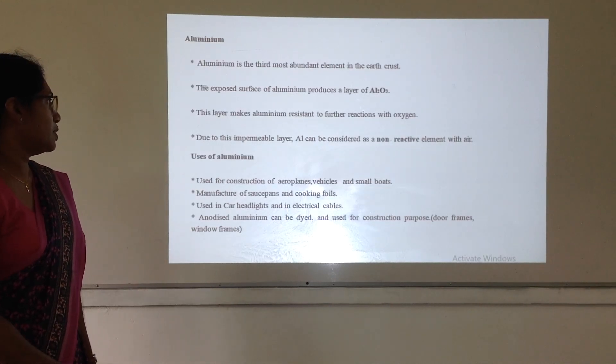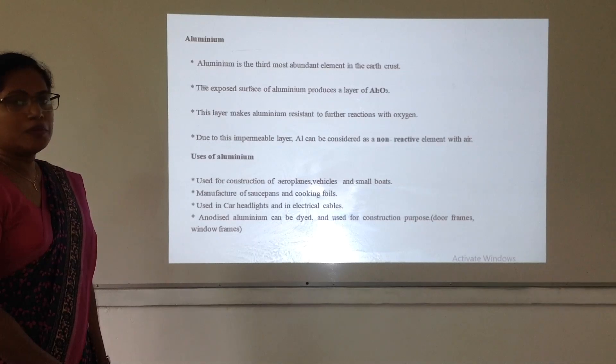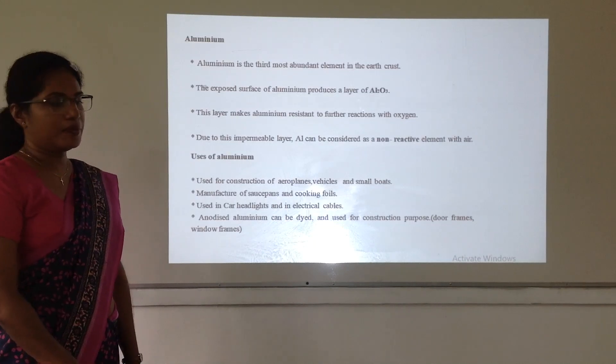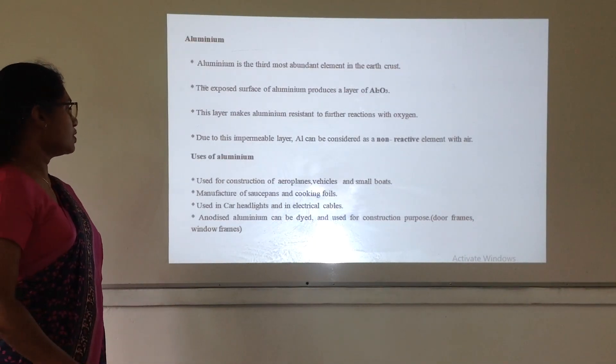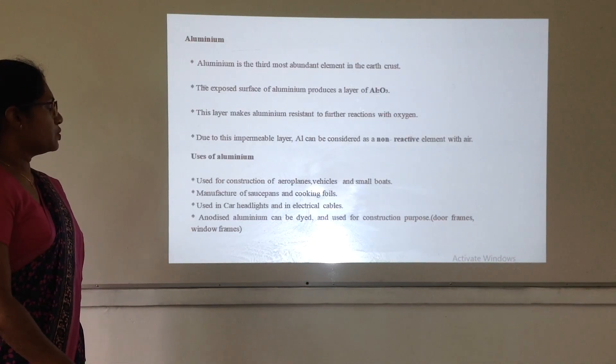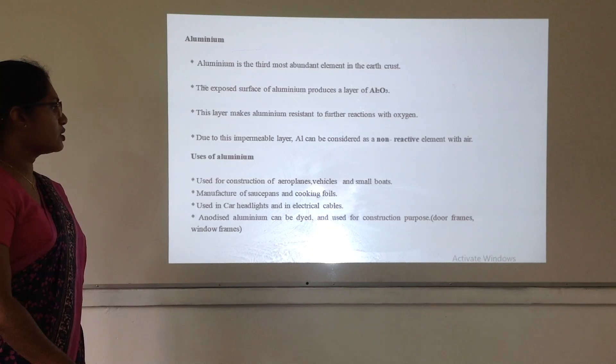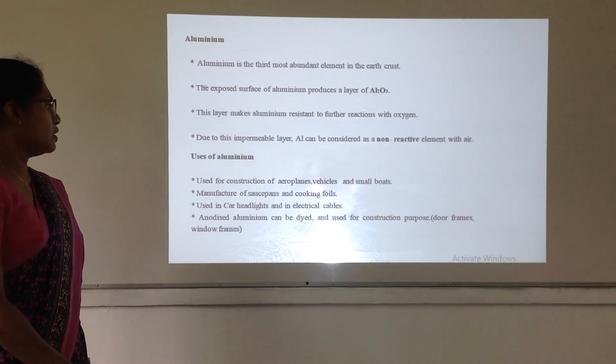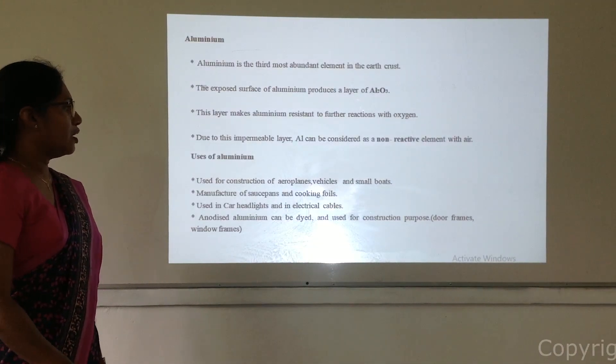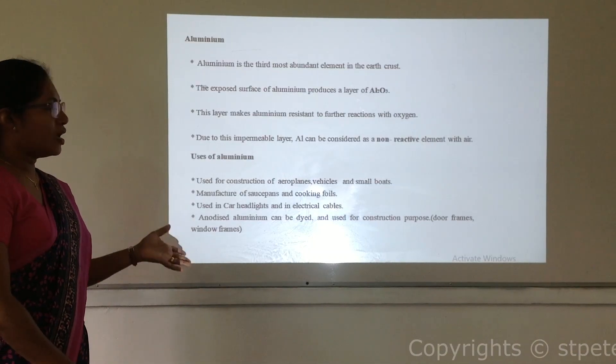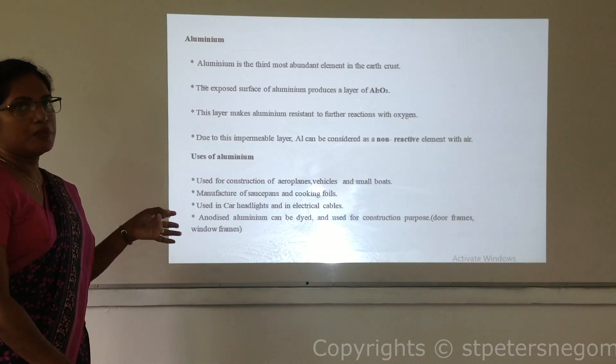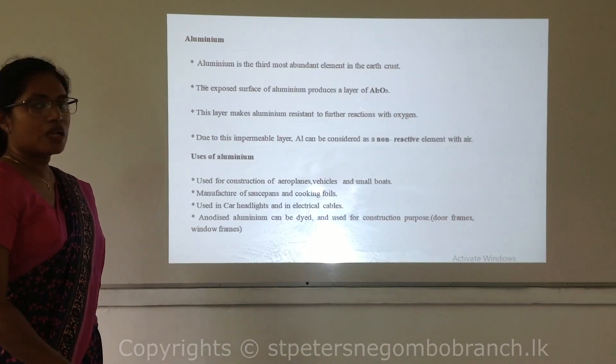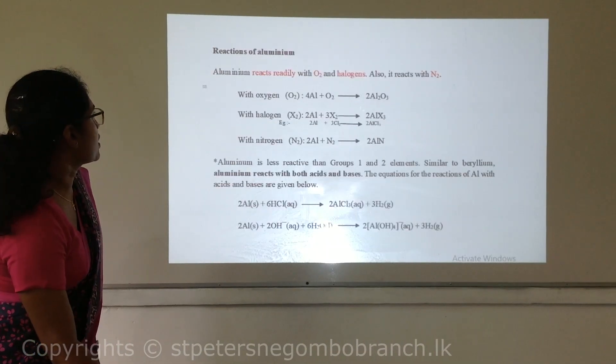That's why we use aluminium to most of our products that we use. Due to this impermeable layer, aluminium can be considered as a non-reactive element with air. Then, uses of aluminium. Aluminium is used in aeroplanes, tankers, foils, and also to manufacture saucepans, cooking utensils, electrical cables, and door frames and window frames. There are many other uses of aluminium.